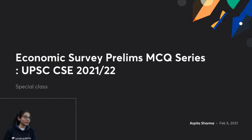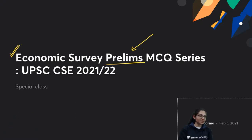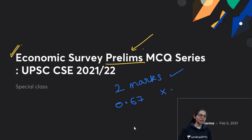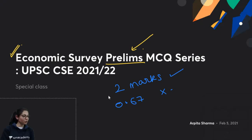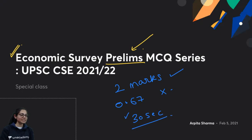Let's start the test. The rules are: two marks for a correct answer and negative marking of 0.67 marks for an incorrect answer. Time will be 30 seconds to answer each question.